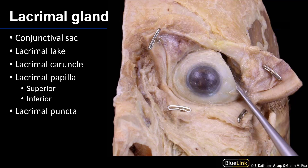Our story starts with the lacrimal gland, which secretes into the conjunctival sac. The conjunctival sac consists of palpebral conjunctiva and bulbar conjunctiva — it's the space between these features. This lacrimal fluid, or tears, are drawn across the anterior aspect of the eye medially, with the medial and lateral portions oriented accordingly.